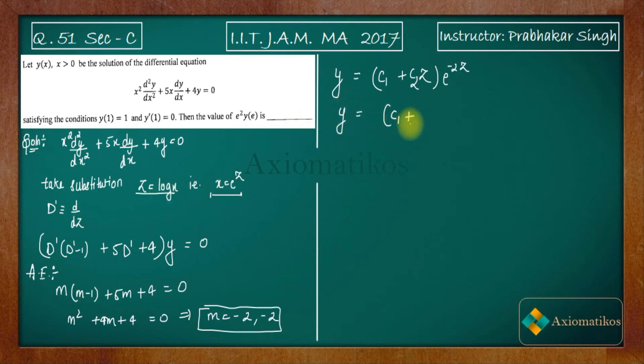If you want to convert it into original form, put back the substitution. You will get c₁ + c₂ log x, then e^(-2z). What is z? It is log x. So we're getting c₁ + c₂ log x, and e^(log x^(-2)) = x^(-2).